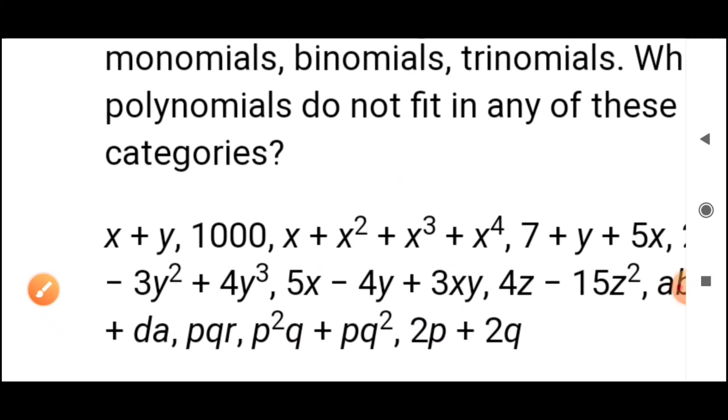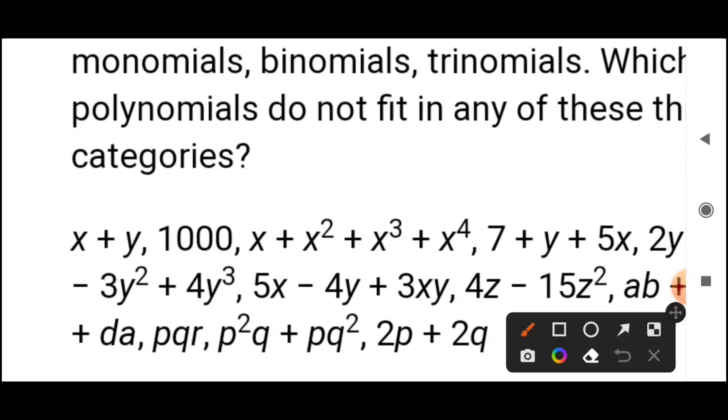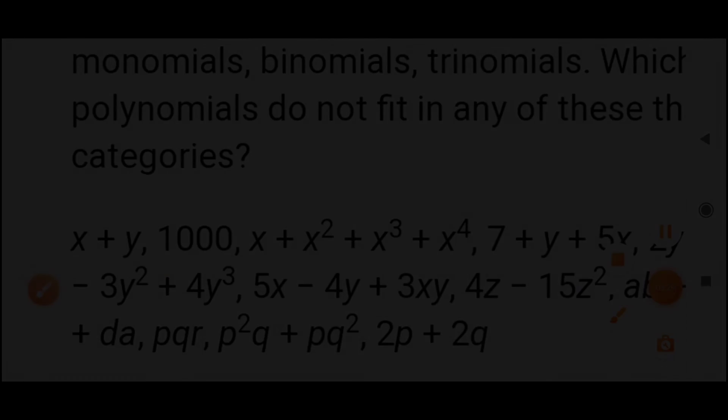I'll just show this part, after this you all will do the remaining parts. From 7 to 5x, how many terms are there? One, two, three. Since this algebraic expression has three terms, we call it trinomial.